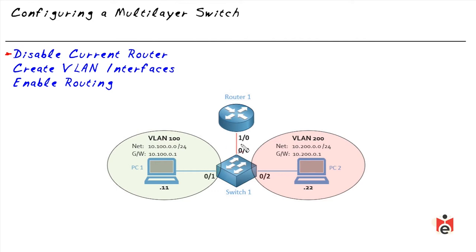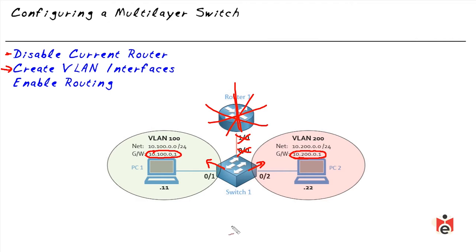To integrate routing onto the switch, we'll first disable the current router by shutting down its interface. Next, on the multi-layer switch, we'll create logical interfaces for VLAN 100 and VLAN 200 and assign them 10.100.0.1 and 10.200.0.1 respectively. Third, we enable IP routing on the multi-layer switch so it can forward packets between networks for PC1 and PC2. This is a hands-on lab, so feel free to follow along on CBT Nuggets.